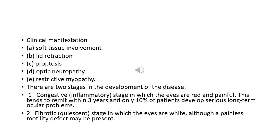There are five clinical manifestations of thyroid ophthalmopathy: (A) soft tissue involvement, (B) lid retraction, (C) proptosis, (D) optic neuropathy, and (E) restrictive myopathy. The disease passes through two stages: the congestive or inflammatory stage — in which the eyes are red and painful, tending to remit within three years — and the fibrotic or quiescent stage, in which the eyes are white and painless, although motility defects may persist.